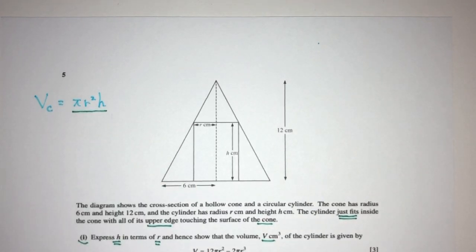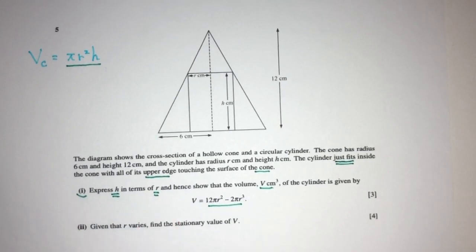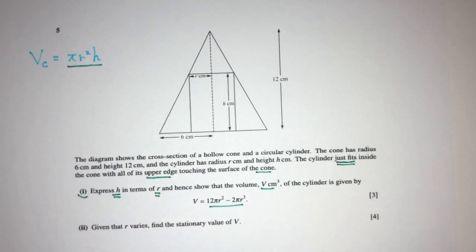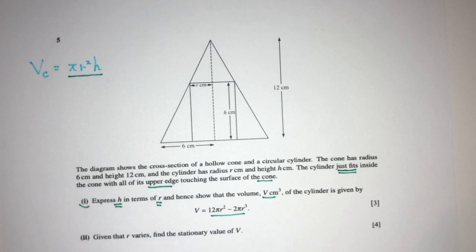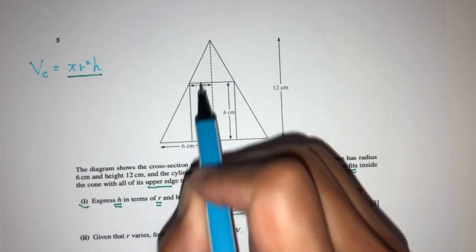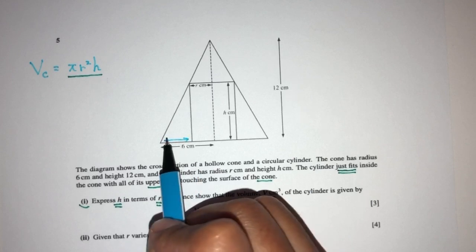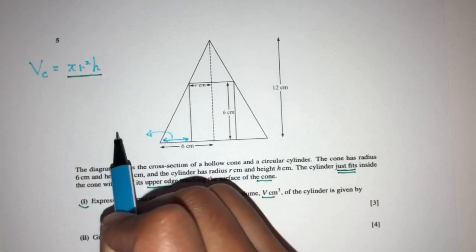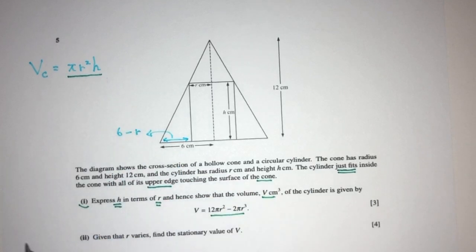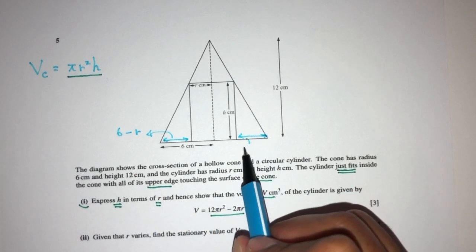Now how can you express H in terms of R? By observation, the first thing that I can see here is if this is 6, this is R, it means that this length over here, for example, has to be 6 minus R, right? And this also has to be 6 minus R.